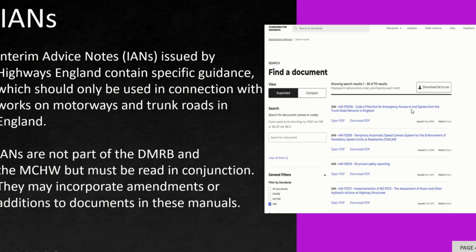For example, there is a code of practice for emergency access and egress from the trunk road network in England, and IAN 113/08 and IAN 136/10 on structural safety reporting. These should be read in conjunction with the DMRB and MCHW, and can be found on the Standards for Highways website.